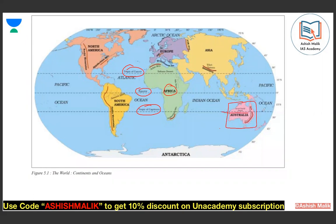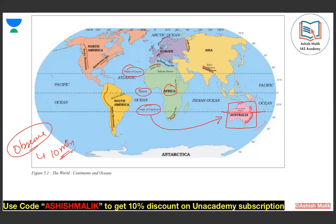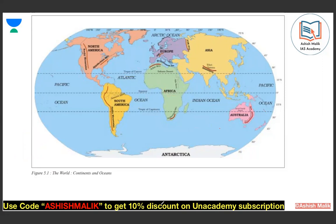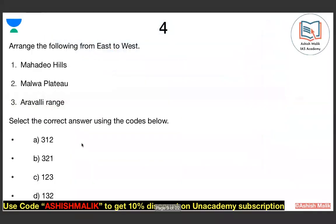You don't need to spend more than 10 minutes with your map — just observe it for 10 minutes and you will discover many new things yourself. UPSC is now asking map-based questions and 'places in news' a lot. Question number 4 is on Indian geography. Here you have to arrange from East to West: Mahadev Hills, Malwa Plateau, and Aravallis.